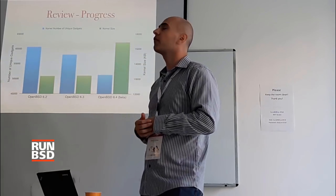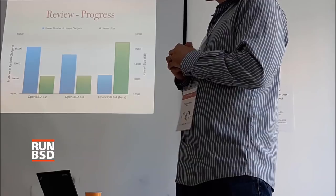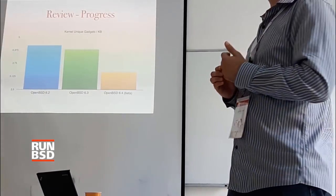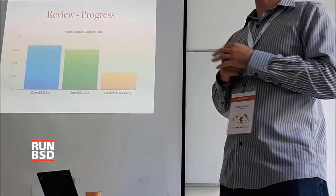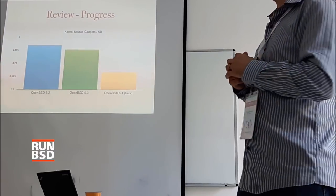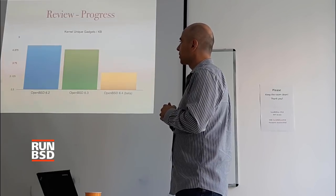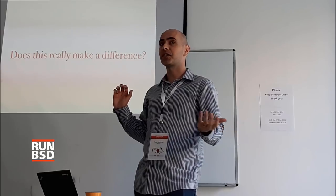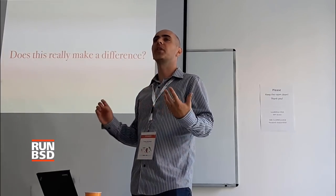If you look at it in a chart: in blue we have the number of unique gadgets, in green we have the size of the binary. In the upcoming 6.4 release, we have significantly fewer gadgets even though the kernel is somewhat bigger. Looking at unique gadgets per kilobyte — in OpenBSD 6.3, we added the register selection change and got a small win. In 6.4, with the fix-up gadgets pass and RectGuard, we bring the number down quite a bit. In 6.2 we had almost 4.5 gadgets per kilobyte; in 6.4 we're almost down to 3. Is it really effective? There are still thousands of gadgets in the kernel. How far do we have to go before the tooling starts to fail?